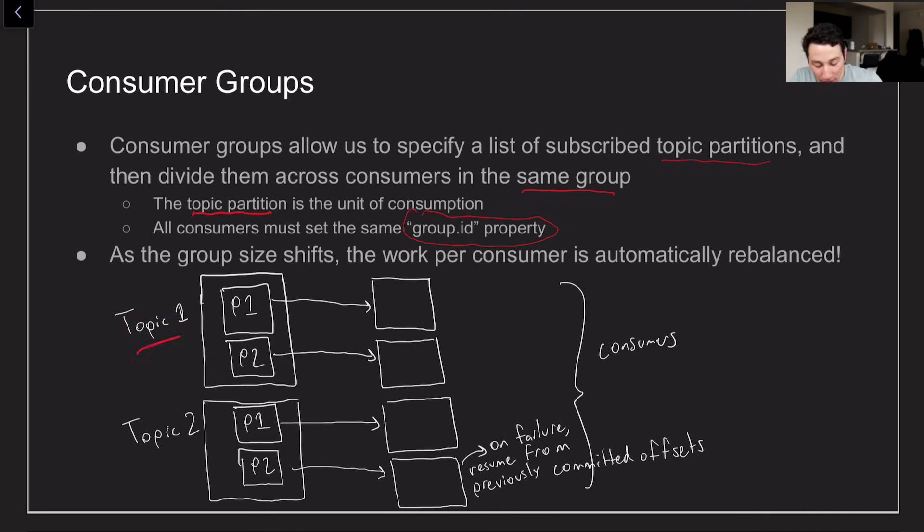So basically if I have topic one here and topic two here and each of them have two partitions, let's say we have four consumers in our group to start. One way of potentially balancing the load here and probably the most fair would be to have every single consumer consuming one topic partition from each of those two topics. Now let's imagine that this guy were to go down. Another thing the consumer groups is going to do for us is it's going to basically keep track of the committed offsets of the consumers across all of the subscribed topic partitions so that when this consumer over here takes this partition from it, we're going to resume from the last committed offset.